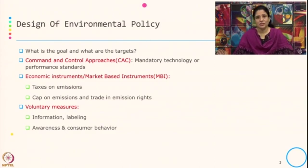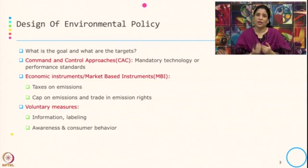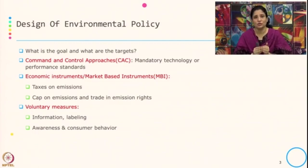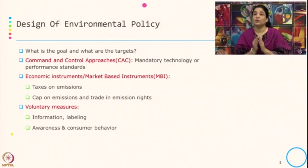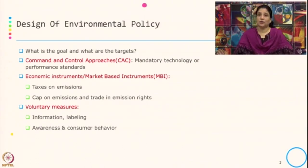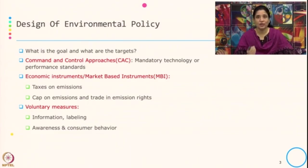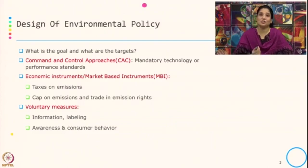When we say market based instrument, apart from giving targets, the other specific feature is that when you achieve the target or go beyond the target, there is some incentive associated with such an instrument. A typical example can be an emission tax — that is, tax on emission — or cap and trade, which is a cap on emission and trade in emission rights. The cap deals with the target part and trade deals with the emission rights, which is the incentive part.